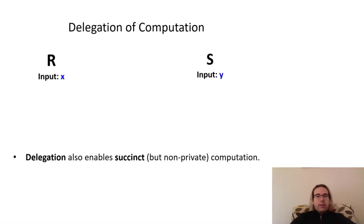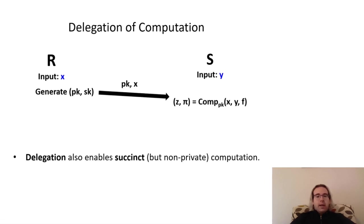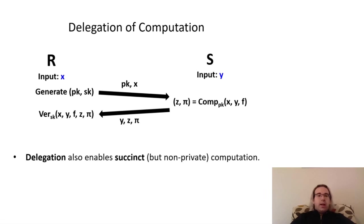Using such a protocol gives us a succinct, albeit not input-private, way of outsourcing computation in a way that can later be publicly verified. To demonstrate how this works, the receiver can set up a key pair, send their input and the public key to the sender, and the sender can then compute the result Z of the function F of X and Y, including a proof of the computation's validity, and then send their input, the output, and the proof to the receiver, who can then verify that the proof is a valid proof of F of X and Y equals Z, and output the result if it verifies, or reject if not.